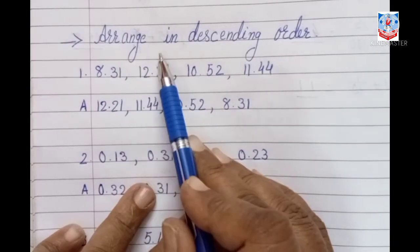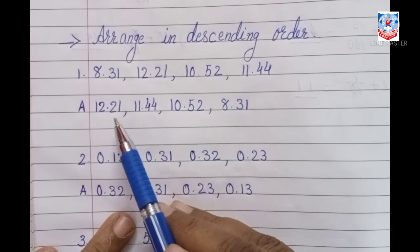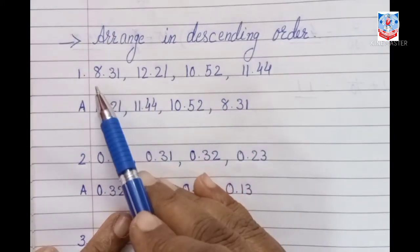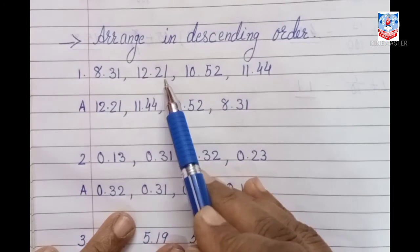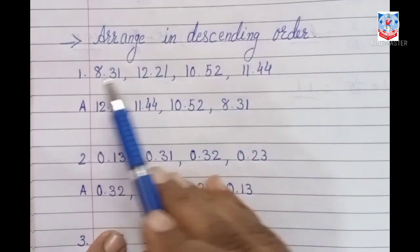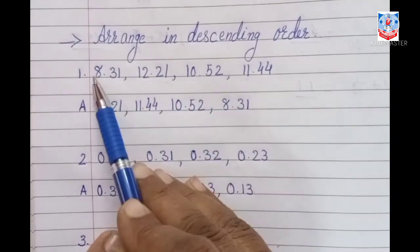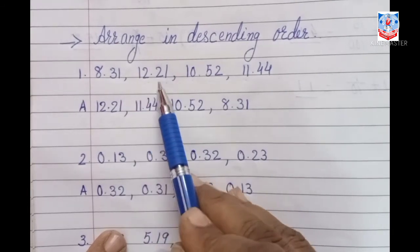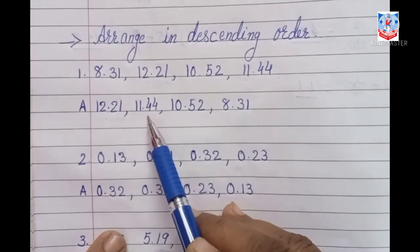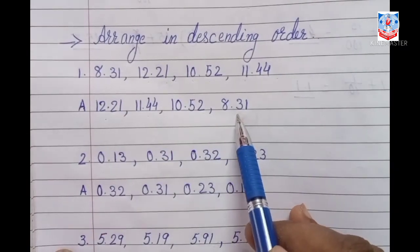Next, arrange in descending order — that means decreasing order, writing the biggest number first. First set: 8.31, 12.21, 10.52, 11.44. Looking at the whole parts, the greatest is 12, so the descending order is: 12.21, 11.44, 10.52, 8.31.